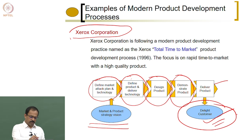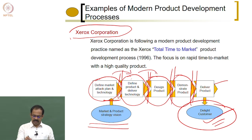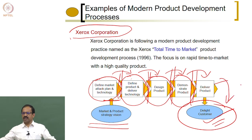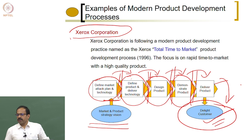In each stage there will be gates. At each gate, the strategy will be evaluated before moving to the next stage, then it will go to the market and delight the customer. You have many stages and gates, and at the end of the final gate, you have a product which goes to the customer.